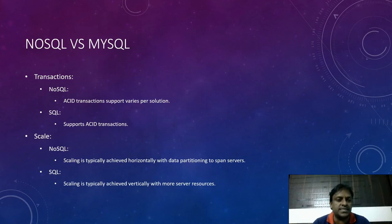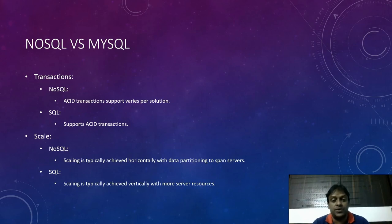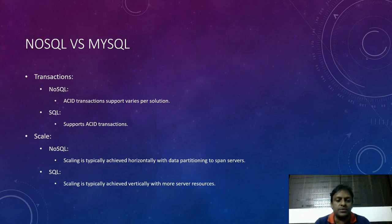Now let's talk about transactions and scalability. For NoSQL, ACID transaction support varies per solution. For SQL, ACID transactions are supported by default. In terms of scaling: NoSQL scaling is typically achieved horizontally through data partitioning across servers, while SQL scaling is typically achieved vertically by adding more server resources.